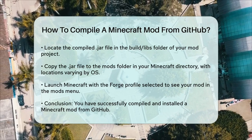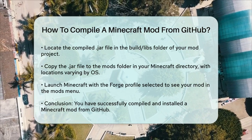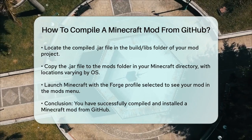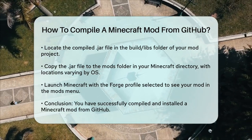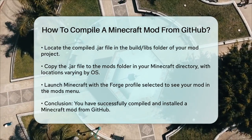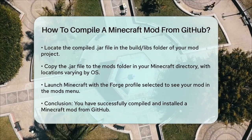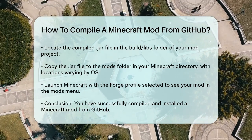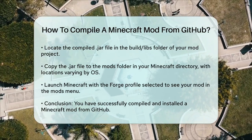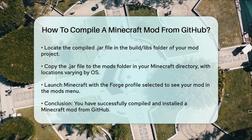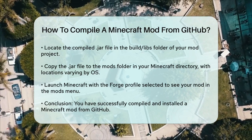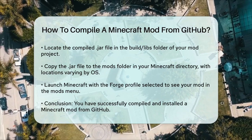Finally, launch Minecraft with the Forge profile selected, and you should see your mod listed in the Mods menu. If everything is set up correctly, your mod should now be active and working in the game. With these steps, you've successfully compiled and installed a Minecraft mod from GitHub. Happy modding!